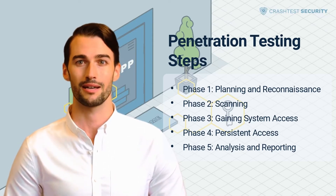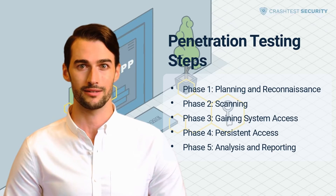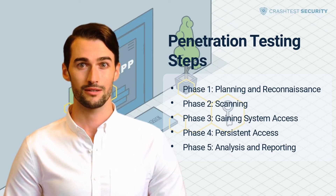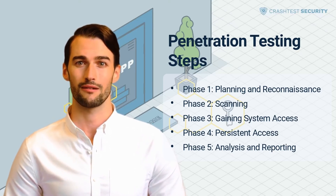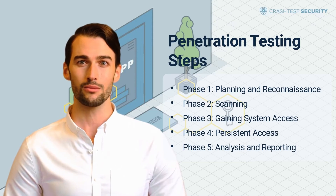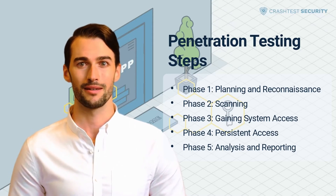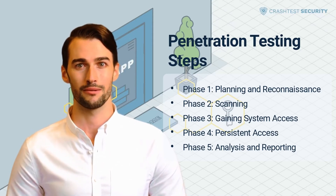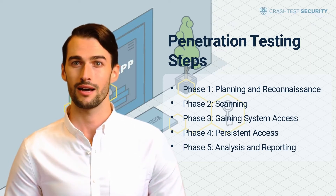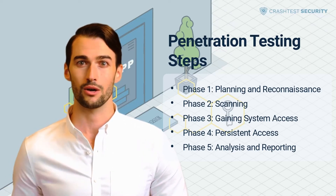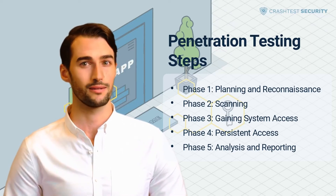Phase 3: Gaining System Access. Having understood the system's vulnerabilities, pentesters then infiltrate the infrastructure by exploiting security weaknesses. Next, they attempt to exploit the system further by escalating privileges, to demonstrate how deep into the target environments they can go.